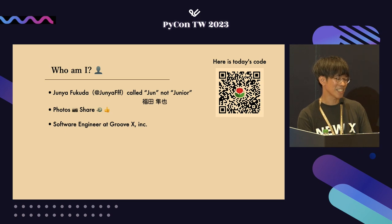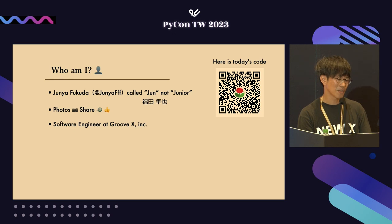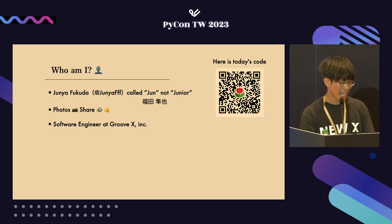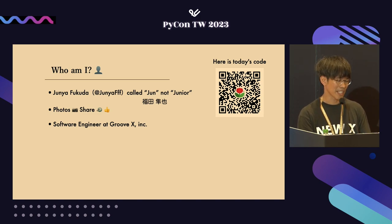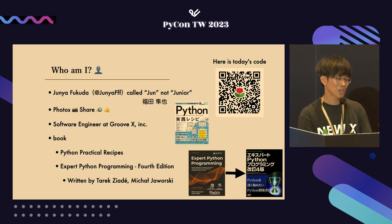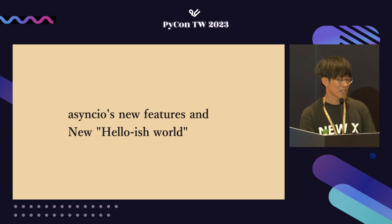My name often gets confused with 'Junior', but it's not junior — it's Junior. If it's hard to pronounce, feel free to call me June. In Japanese, my name is written like this. I'm a software engineer at GrooveX Inc., and I also write and translate English books — currently only available in Japanese, so it's an excellent choice for those wanting to learn Japanese.